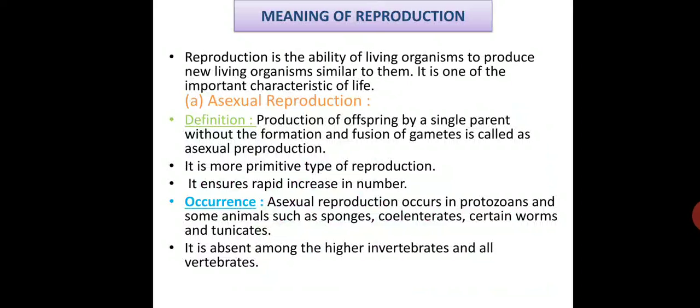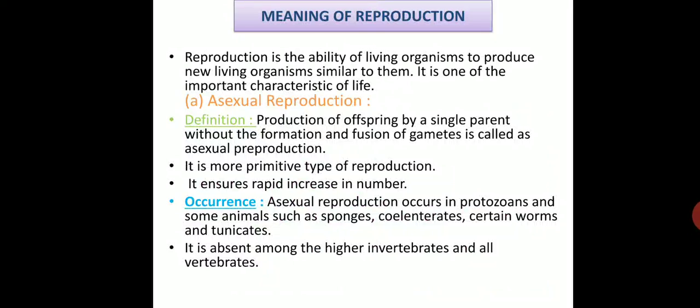So what is the definition of asexual reproduction? The production of offspring by a single parent without the formation and fusion of gametes is called asexual reproduction.